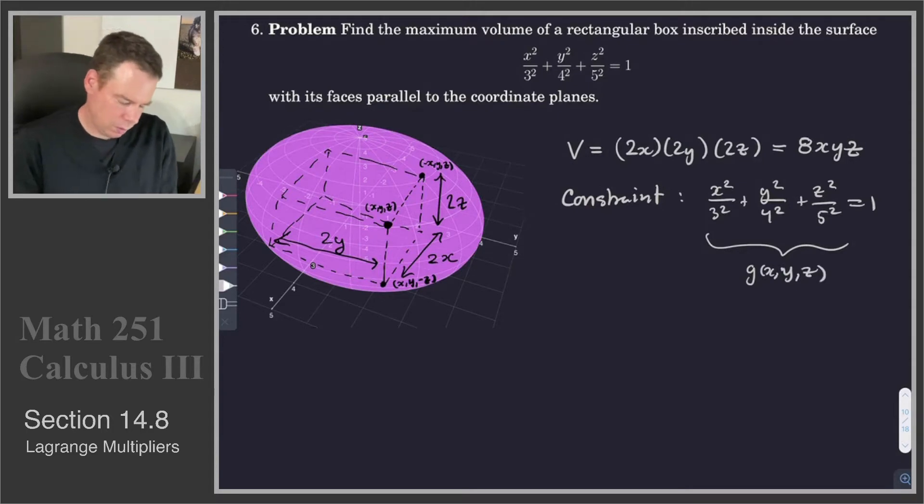So now we're all set up to use Lagrange multipliers. We need to work out V_x = λg_x, V_y = λg_y, V_z = λg_z, and then we've got our constraint equation, our ellipsoid.